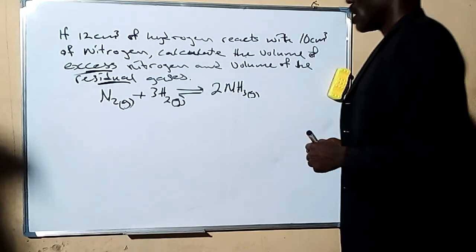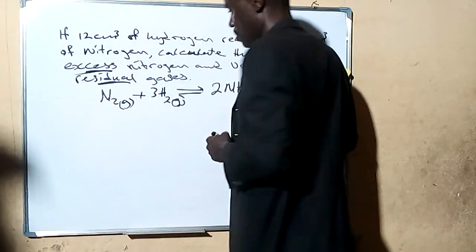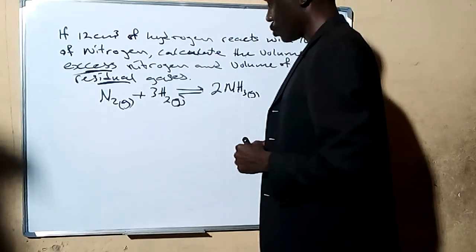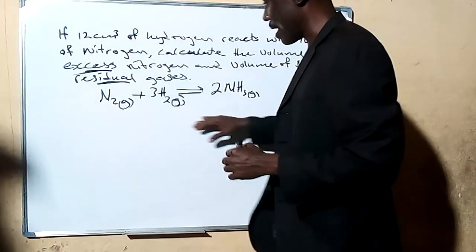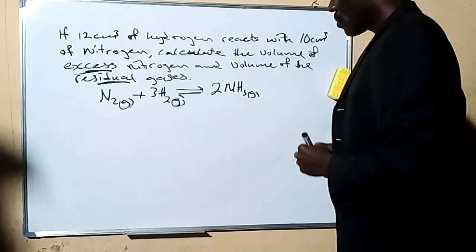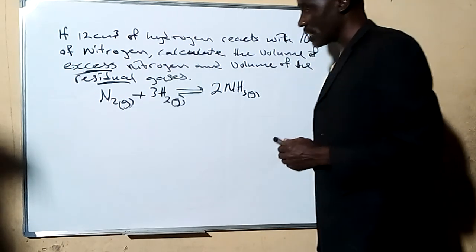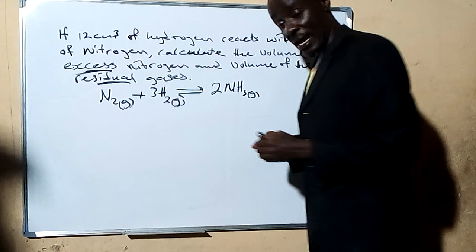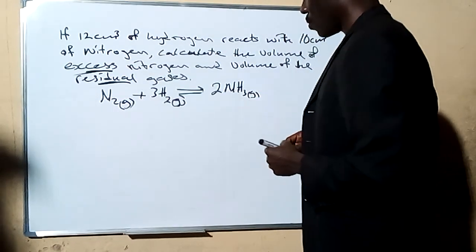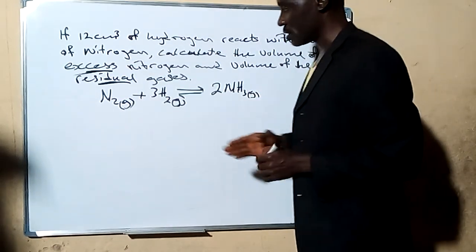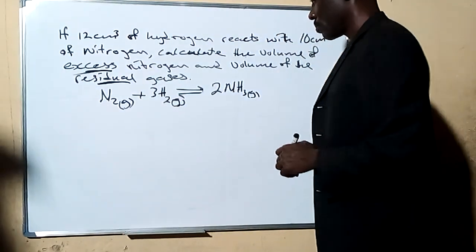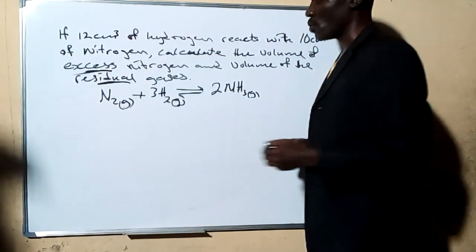So in this chemical equation, we'll be able to see how they combine. According to the law, we're meant to understand that when gases combine, they combine in a simple ratio of their volumes — that is, the volumes of the reactants and also the products exist in simple ratios.